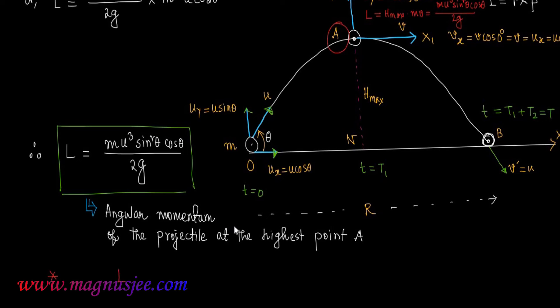Therefore the angular momentum L is directly proportional to the third power of the initial velocity u of projection of the projectile, that is L is proportional to u cubed.